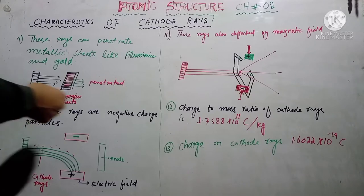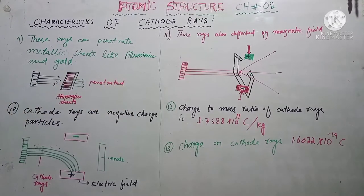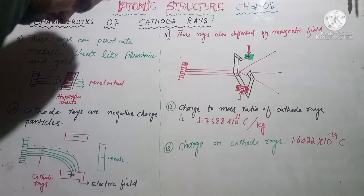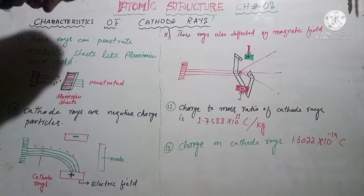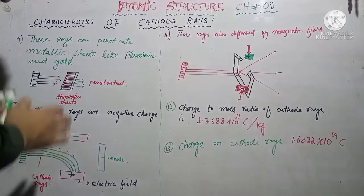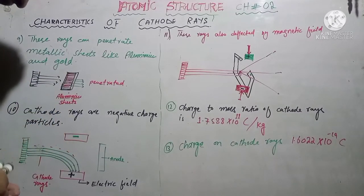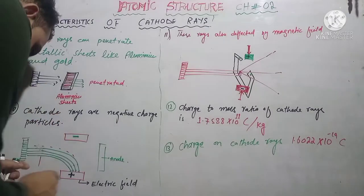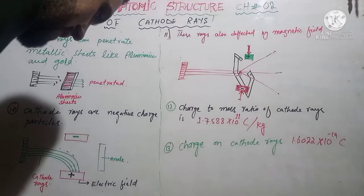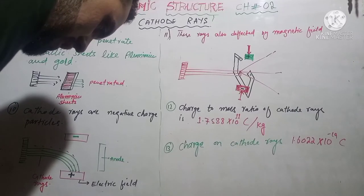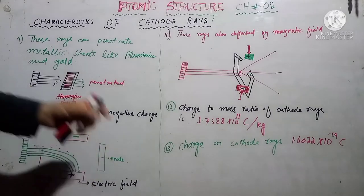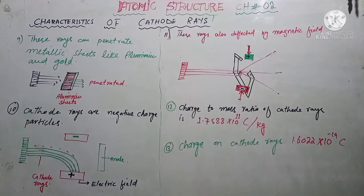Characteristic number 10: cathode rays are negatively charged particles. When an electric field is applied, they deflect toward the positive side, meaning the positive electrode, confirming their negative charge.